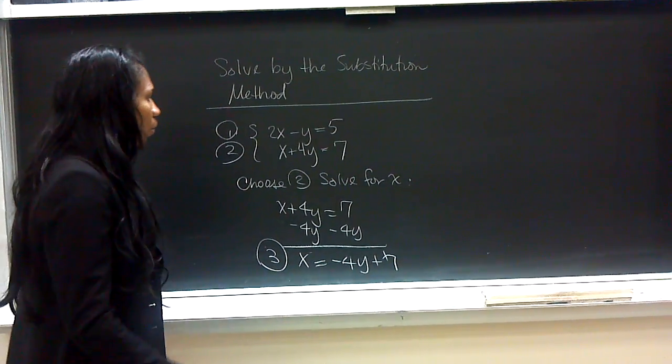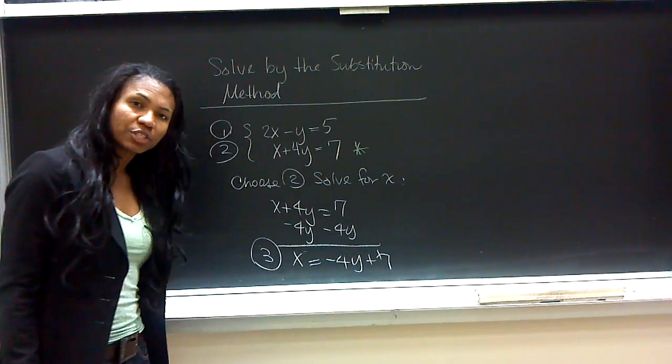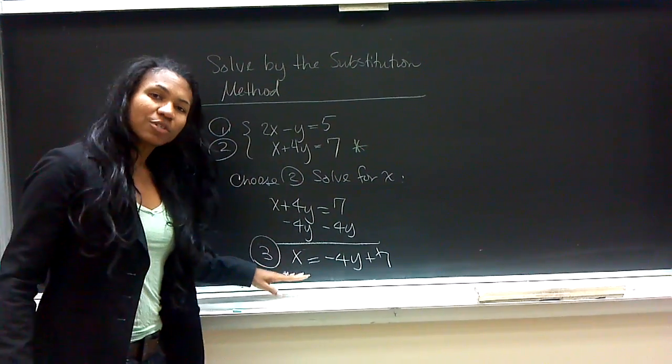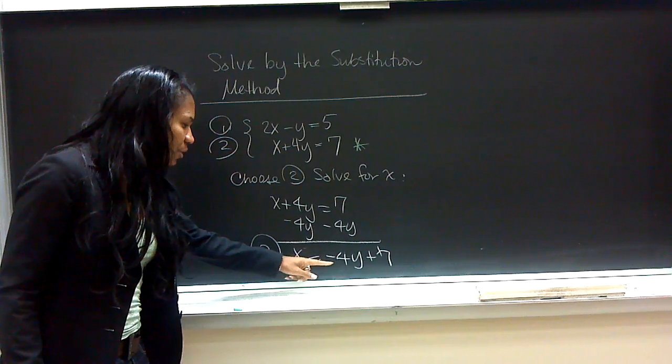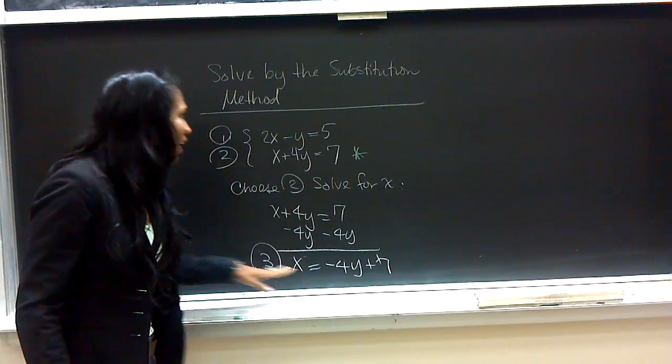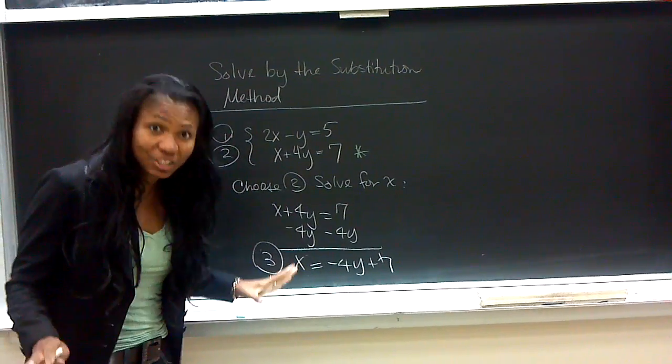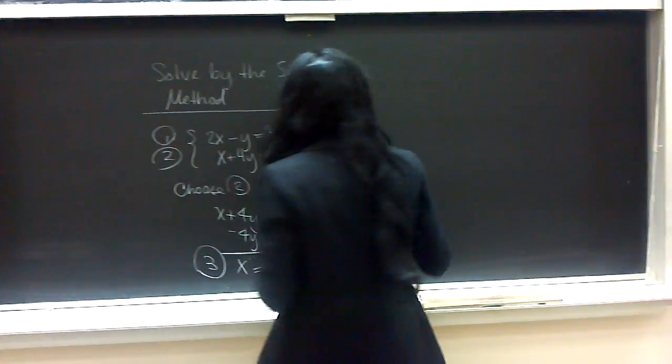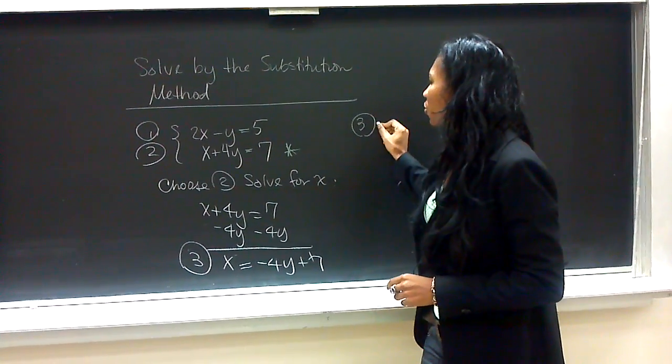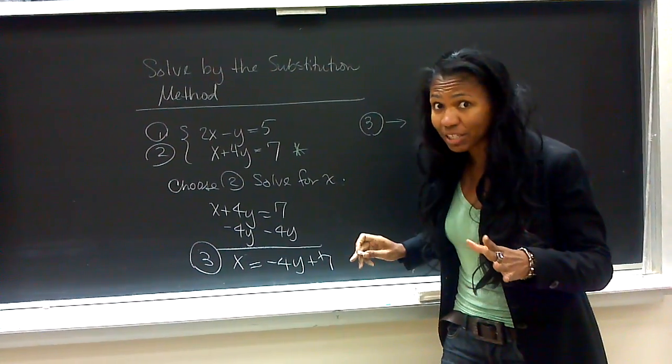Now, we originally manipulated the second equation. With our result, what we want to do is substitute negative 4y plus 7 into place of x in the equation that we haven't touched yet. We're going to now put equation 3 into the first equation.